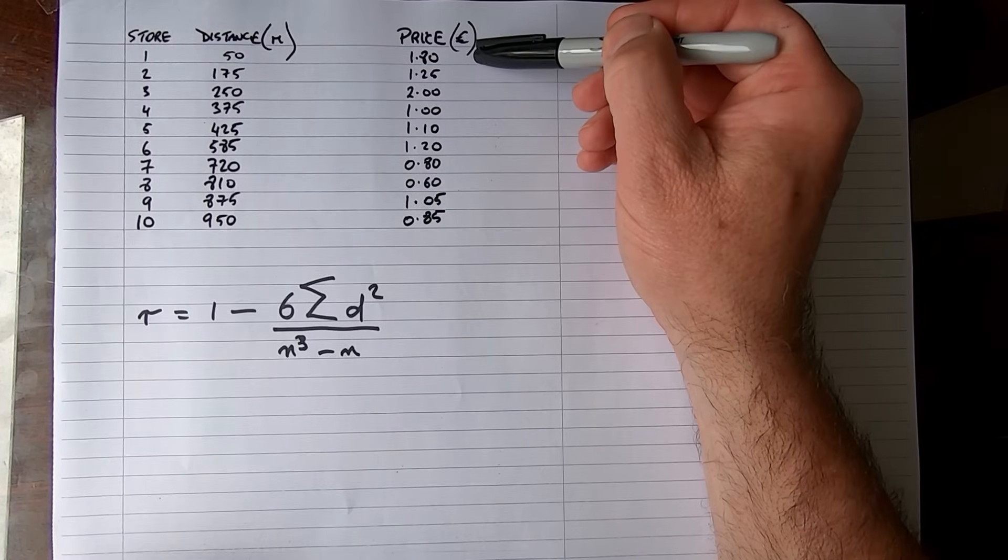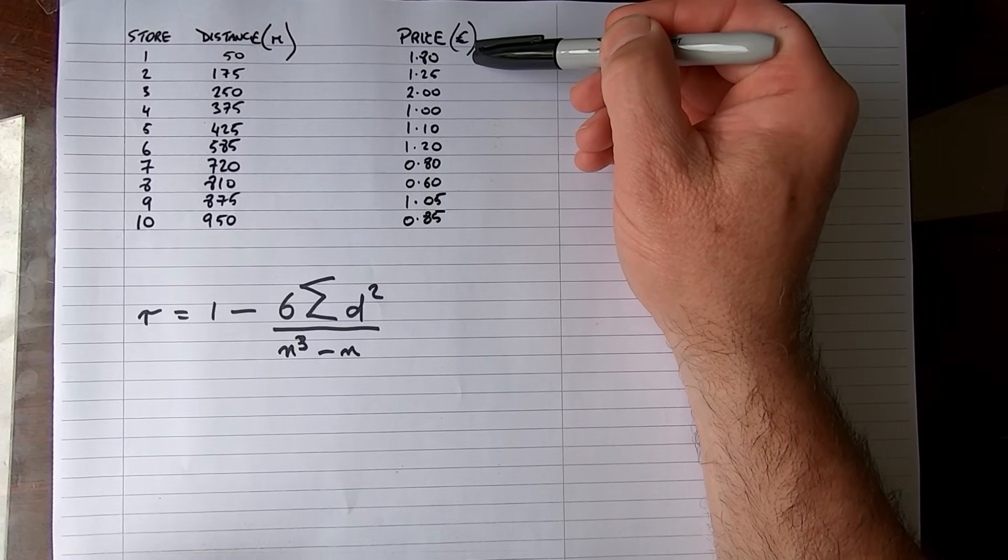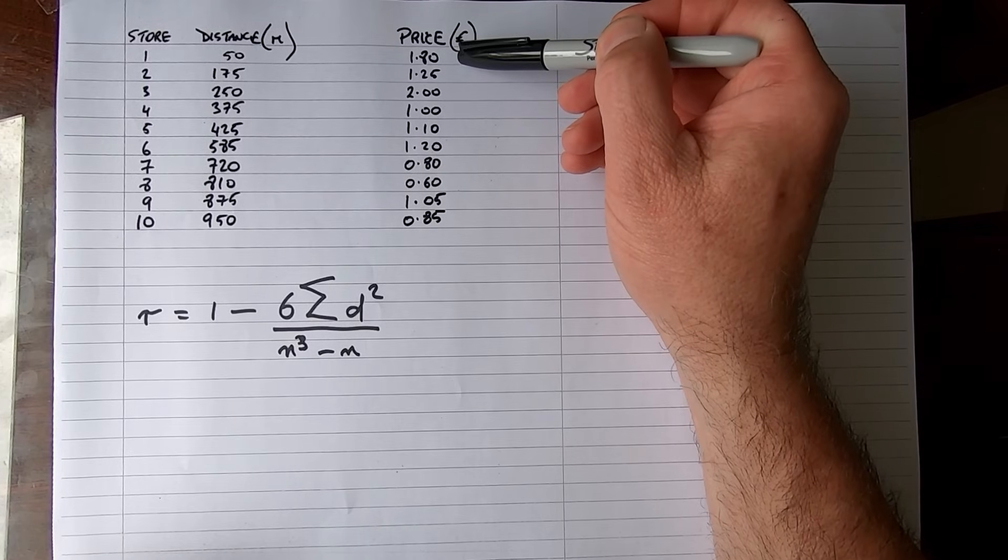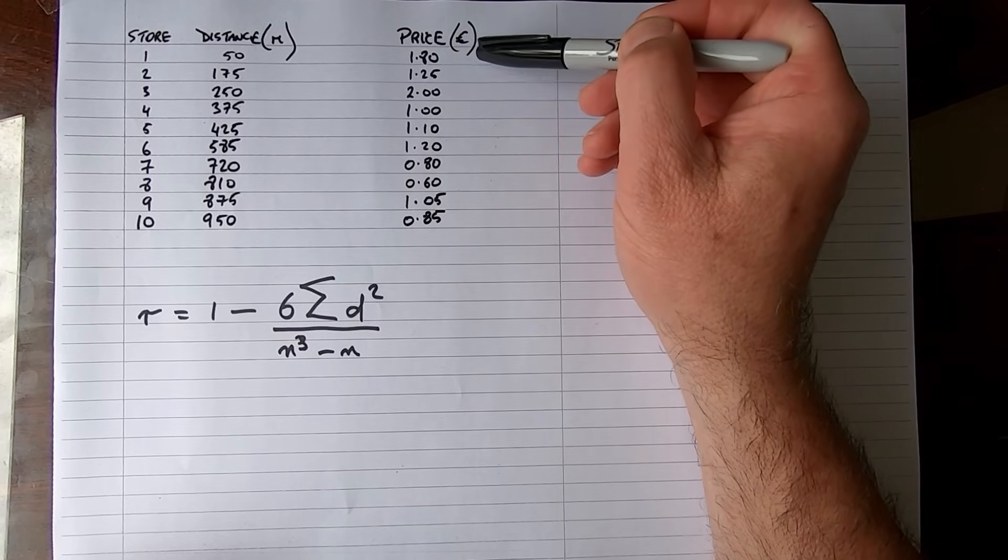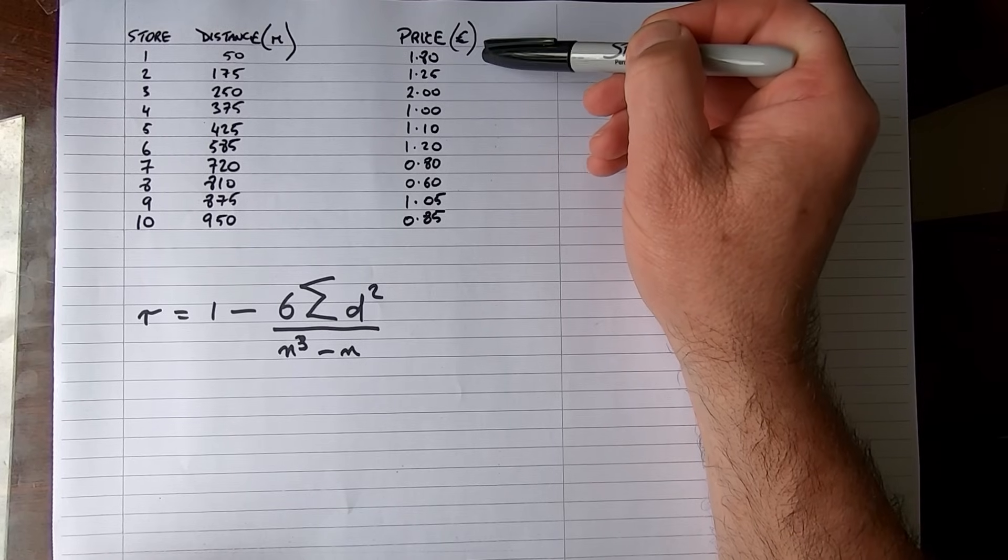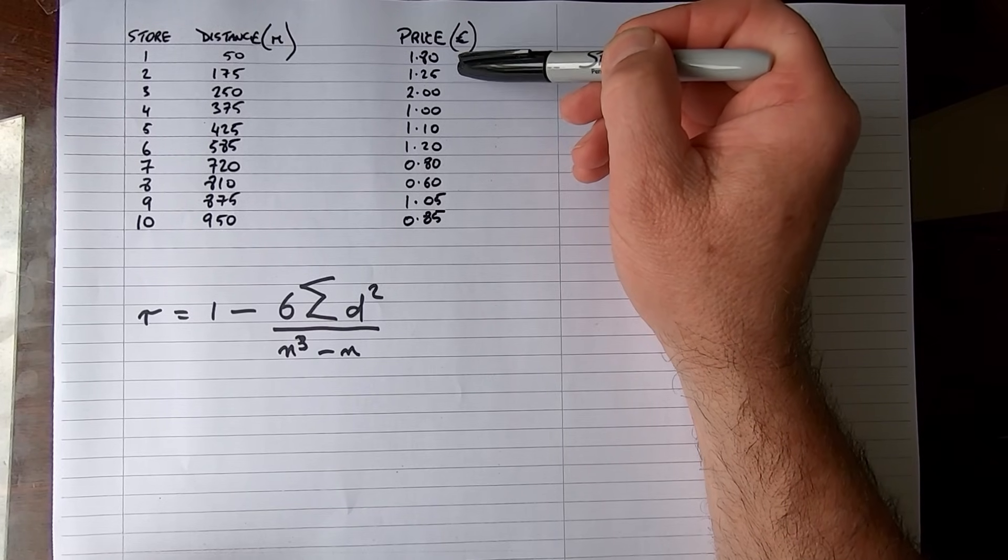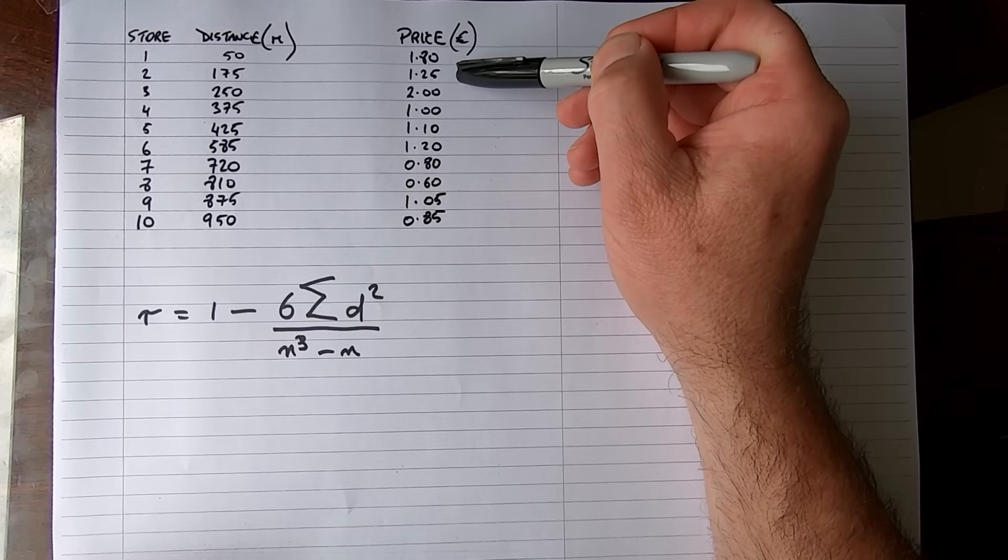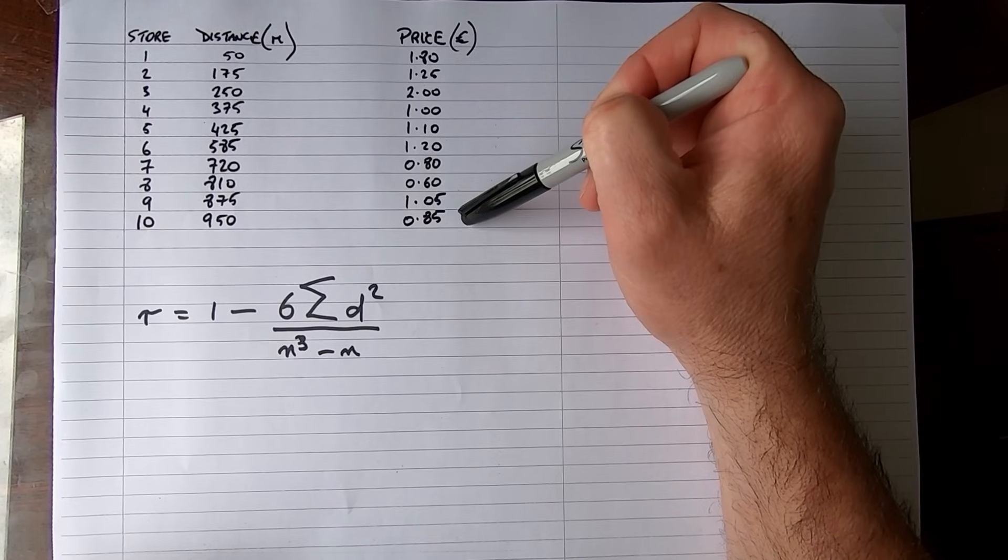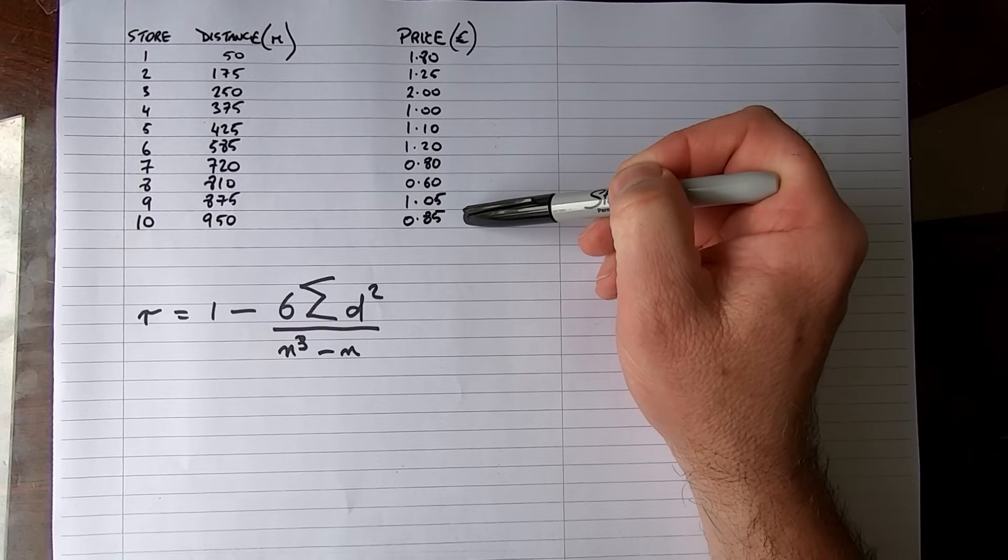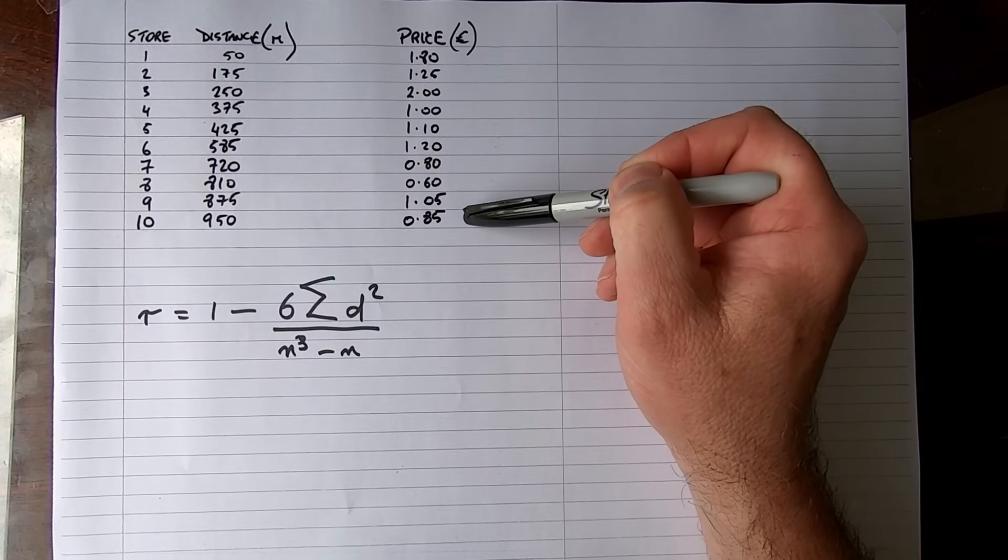Now what I've done then is I've checked the price of a bottle of ordinary water in each of these stores. So for example, in store number one, 50 meters from the city center, the price of a bottle of water is €1.80. In store number two, 175 meters from the city center, the price is €1.25, and so on right down to the tenth store, 950 meters from the city center, and the price of a bottle of water there is €0.85.